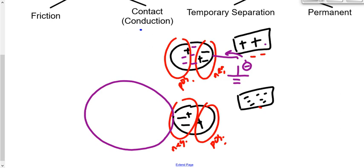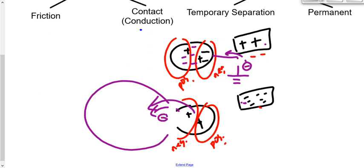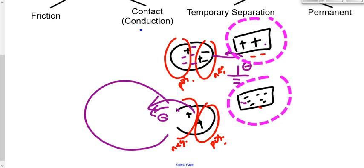For a positive charge by induction, attach another conductive ball instead. Electrons get pushed away from the original object into the attached ball, leaving a net positive charge on the original. Separate them and it's a permanent positive charge. Some might say there's conduction taking place as electrons move between objects, but we still call the overall process induction because the charging object isn't transferring charge to or touching the object being charged.